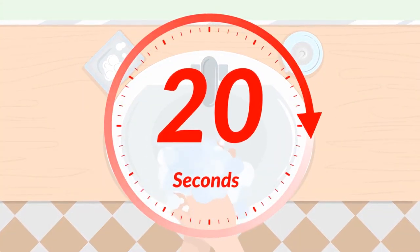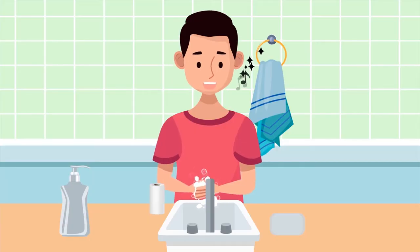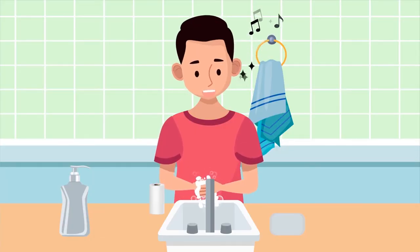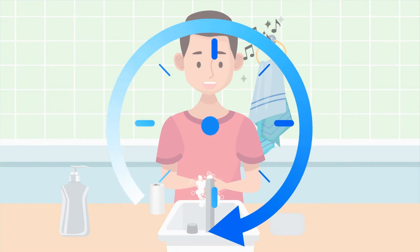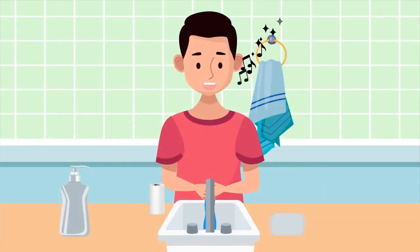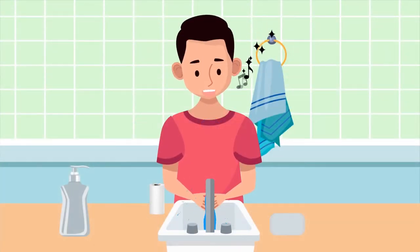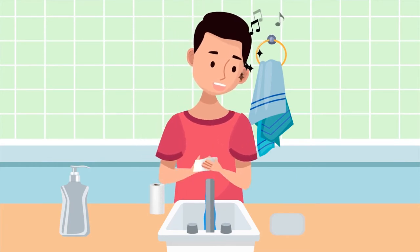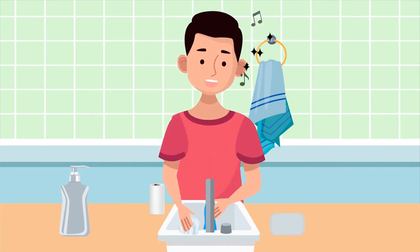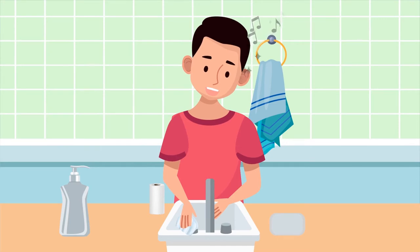Scrub your hands for at least 20 seconds. Singing the happy birthday song twice will help you with timing how long you should scrub your hands. Rinse your hands well under clean running water. Dry your hands using a clean cloth or paper towel. Use the cloth or paper towel to turn off the water faucet when you are finished.